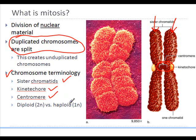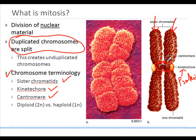Centromeres are also regions where the two chromatids are constricted and attached. Kinetochores are more protein in nature, and they develop on either side of the centromere during cell division. The centromere is the connection point, and the kinetochores are the proteins shown on either side — the yellow region as shown in the image.